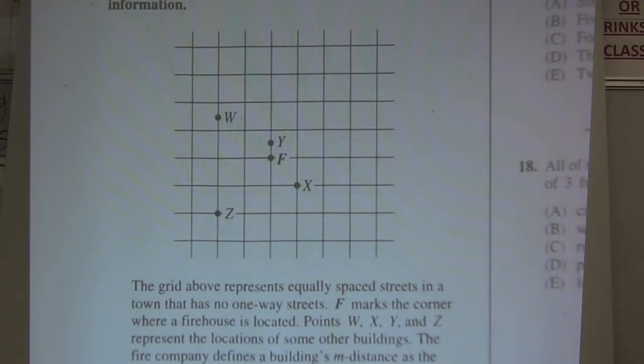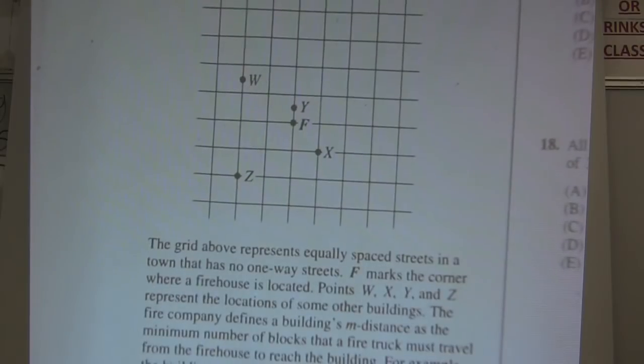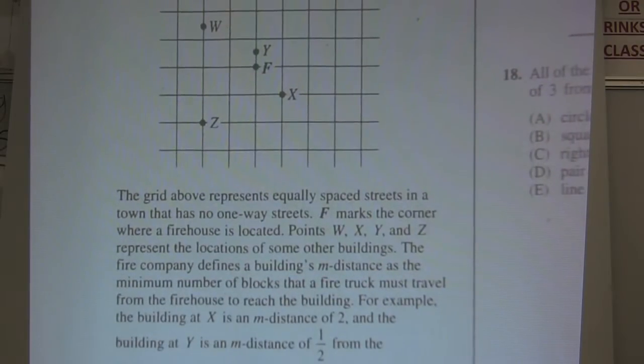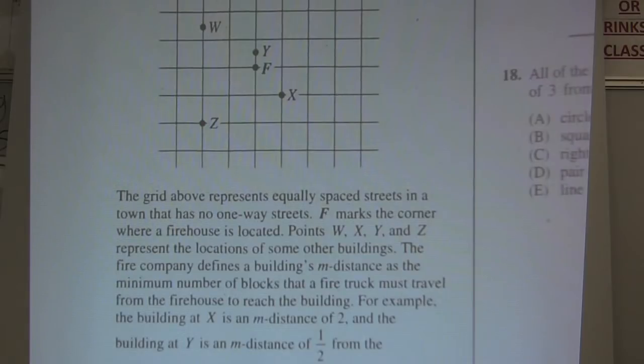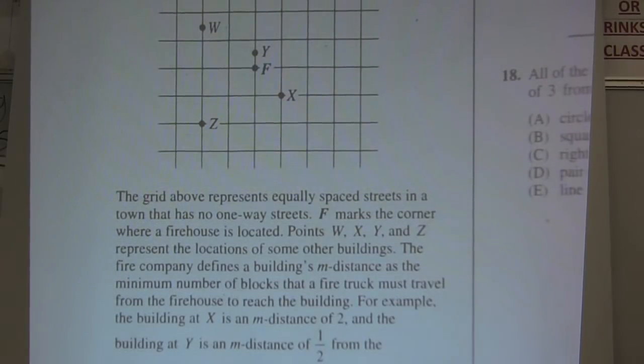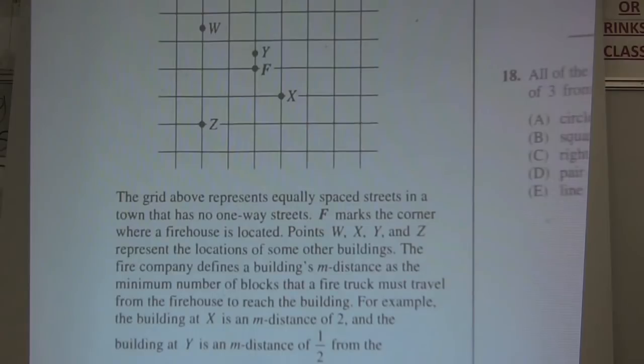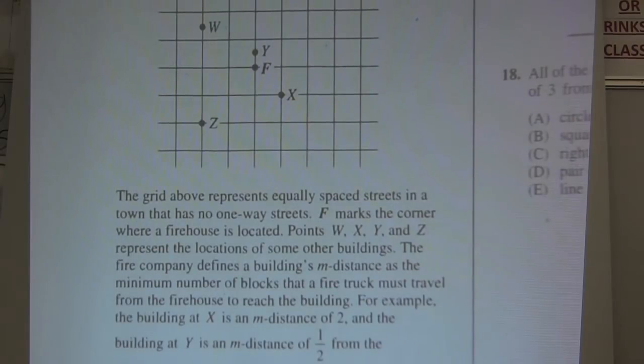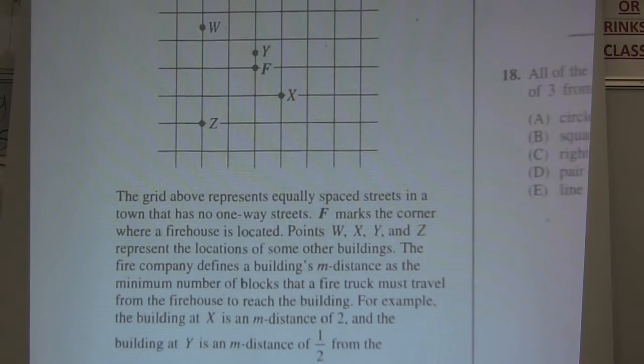Let me move it up so I can read it a little bit more. The grid above represents equally spaced streets in a town that has no one-way streets. F marks the corner where the firehouse is located, and points W, X, Y, and Z represent the locations of some other buildings. The fire company defines a building's m-distance as the minimum number of blocks that a fire truck must travel from the firehouse to reach the building.